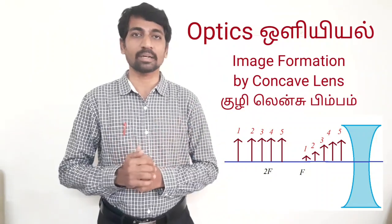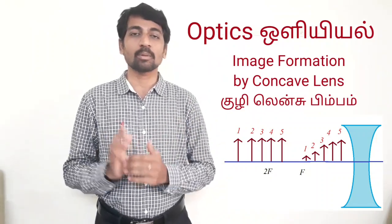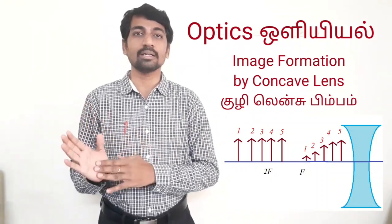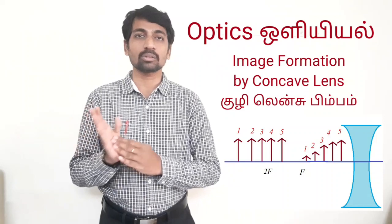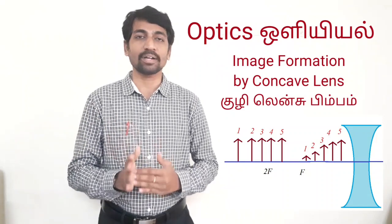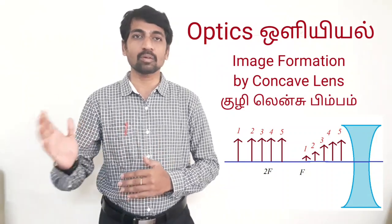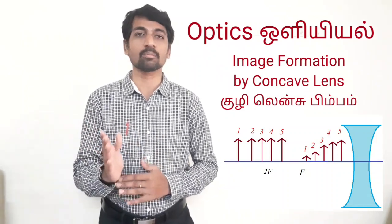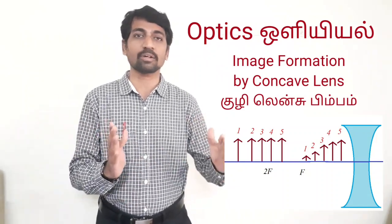So you have to look at the diagram. If the object is at positions 1, 2, 3, 4, 5, we will see how the image formation moves.